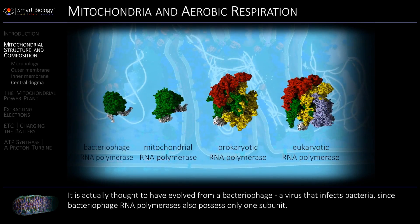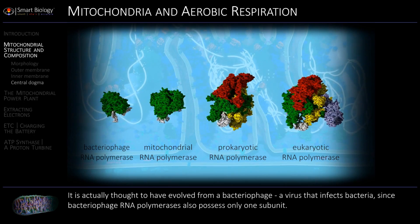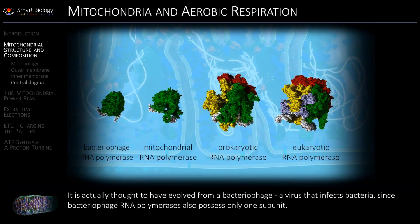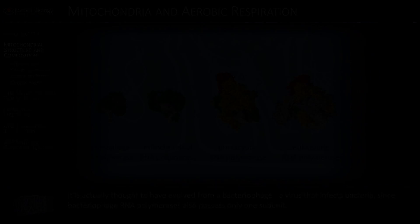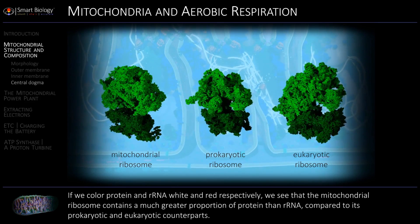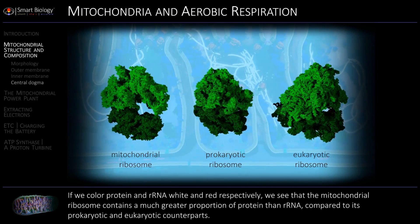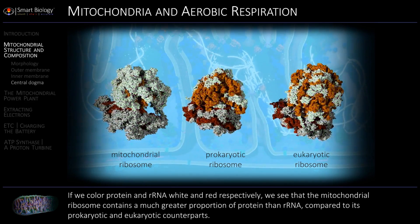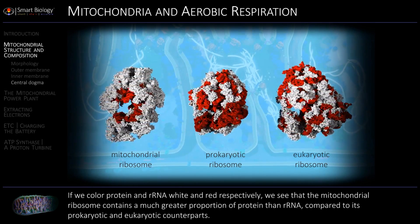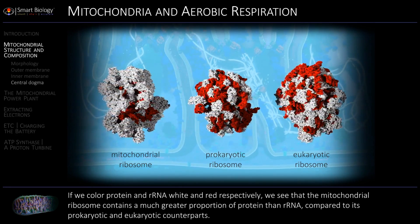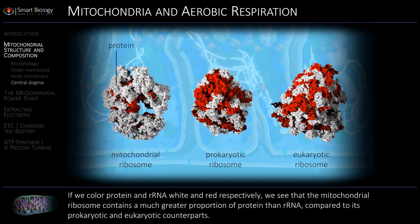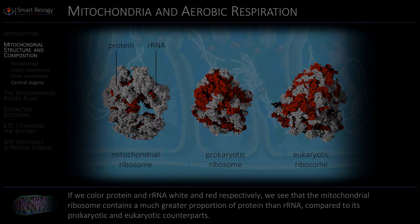Since bacteriophage RNA polymerases also possess only one subunit. If we color protein and rRNA white and red respectively, we see that the mitochondrial ribosome contains a much greater proportion of protein than rRNA.